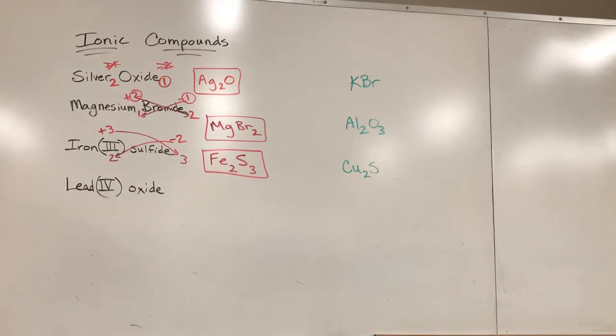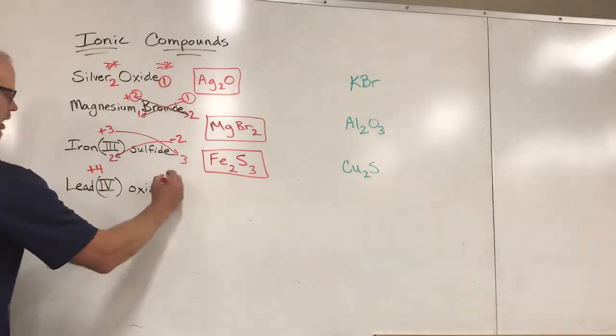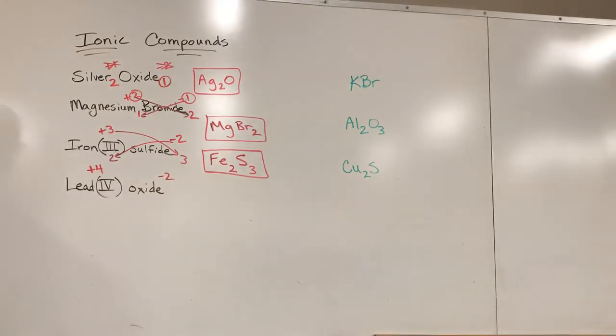Last one: take a look at lead four oxide. That means lead is a plus four. Oxide gives us a minus two. If you're just doing your shortcuts you would say oh, two of these, four of those.